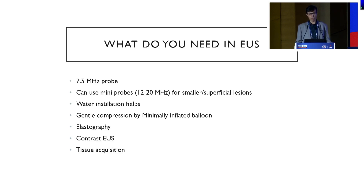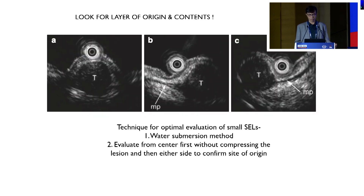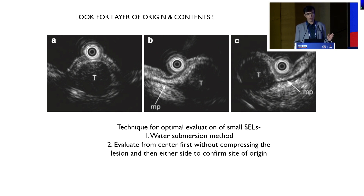While embarking on EUS, what do you need? You need a 7.5 MHz probe. You can also use mini probes of 12 to 20 MHz for smaller lesions. Water instillation always helps. You can do gentle compression with a minimally inflated balloon, and of course you have elastography, contrast EUS, and tissue acquisition. Put your probe on the SEL in the center to look for echogenicity, then put it on the side — once you press on the side you will be able to appreciate the layer of origin better.